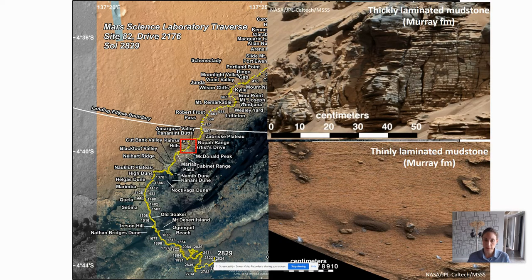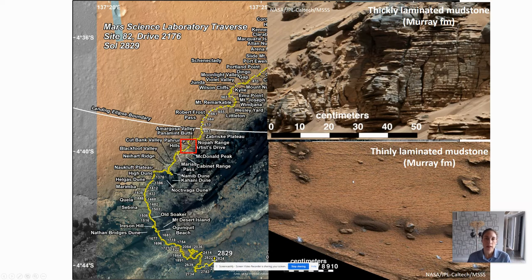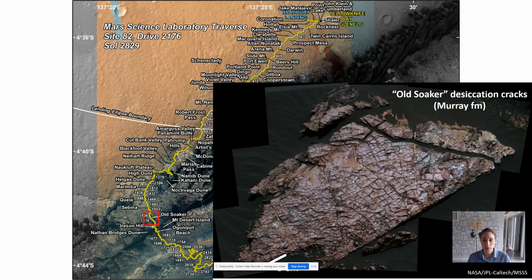Once we reached the lowermost layers of Mount Sharp, we saw abundant mudstones indicative of lake deposition — some thickly laminated, suggesting deposition closer to the lake shore, and some thinly laminated, suggesting further from shore. In some locations we saw evidence for the drying out of these lake sediments. One outcrop we named Old Soaker, about a meter across, shows fossilized desiccation cracks from sub-aerial drying of muds on the Martian surface about 3.5 billion years ago.